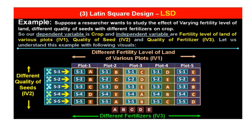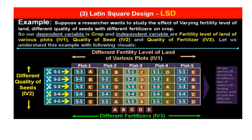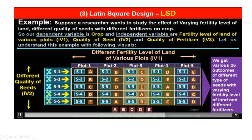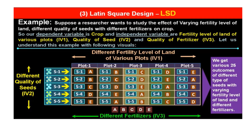So here, fertilizers are first mixed into the soil in each plot and are not repeated in the same position. Next, seeds are used. We then get 25 outcomes representing different types of seeds with varying fertility levels of land and different fertilizers, and we observe their effect on the crop — which is our dependent variable.